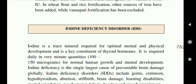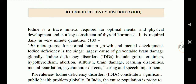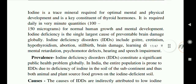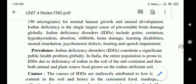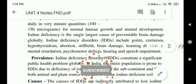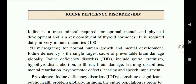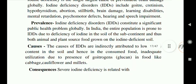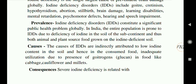Next is iodine deficiency disorder. Iodine is a trace mineral required for optimal mental and physical development and is a key constituent of thyroid hormone. It is required daily in very minute quantities — 100 to 150 micrograms — for normal human growth and mental development. Iodine deficiency is the single largest cause of preventable brain damage globally. Iodine deficiency diseases include goiter, cretinism, hypothyroidism, abortion, stillbirth, brain damage, learning disabilities and mental retardation.